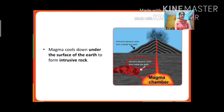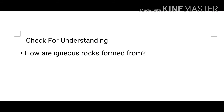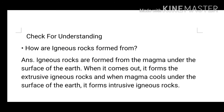Let's check how much you have learnt. The question is: how are igneous rocks formed? The answer is: igneous rocks are formed from magma under the surface of the earth. When magma comes out it forms extrusive igneous rocks, and when magma cools under the surface of the earth it forms intrusive igneous rocks.